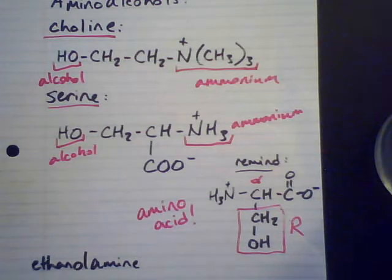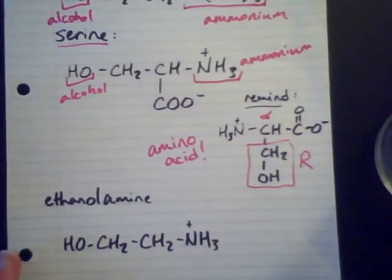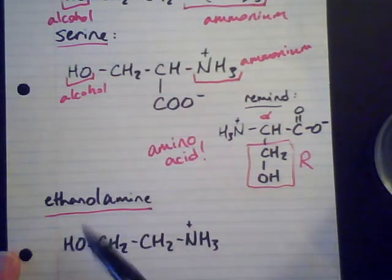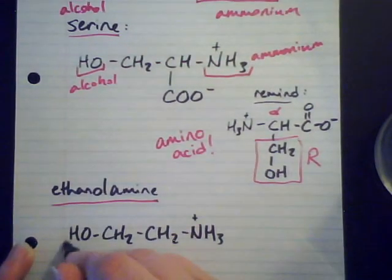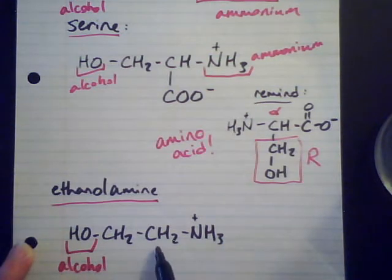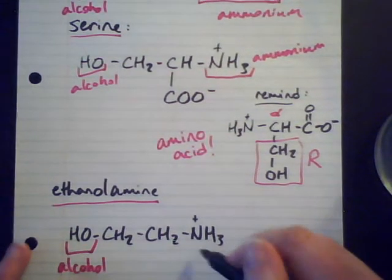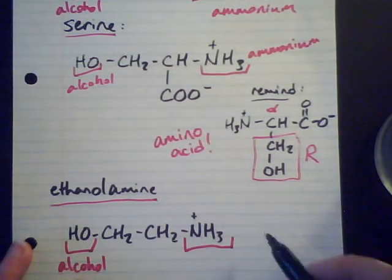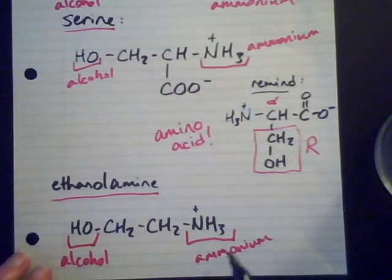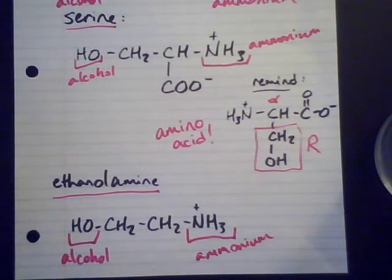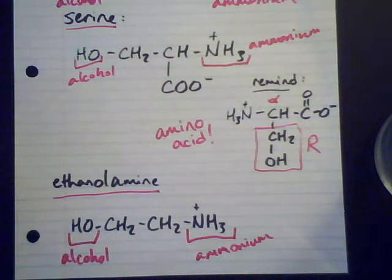The other amino alcohol to know is ethanolamine. Ethanol - the 'eth' prefix means two carbons, and the '-ol' ending means it's an alcohol, so here's the alcohol group and my two carbons. It should more appropriately be titled ethanol ammonium, because we have an ammonium cation. So any of these three - choline, serine, and ethanolamine - can be on the other side of the phosphate group for phosphoglycerides or phospholipids, and there are different classes depending on which amino alcohol they're attached to.